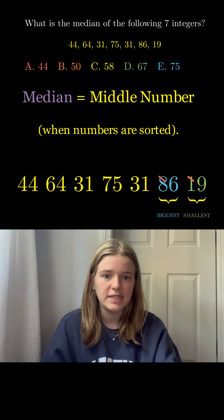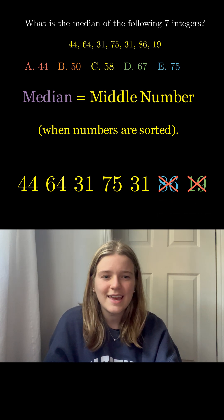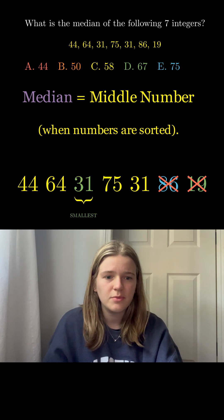Here the smallest number is 19 and the biggest is 86. So we cross both of them out because they can't be the middle number. Let's repeat that process.